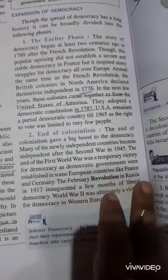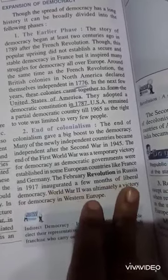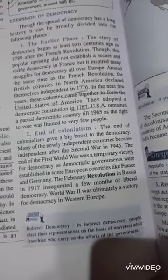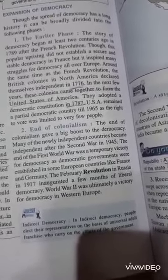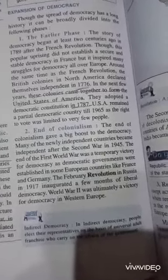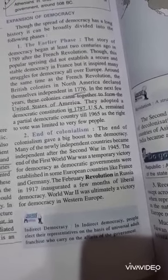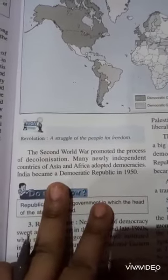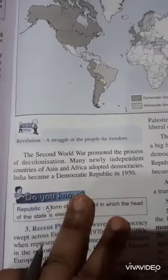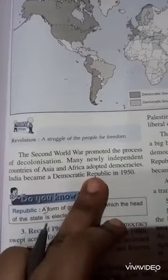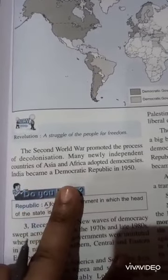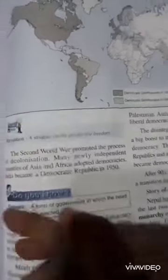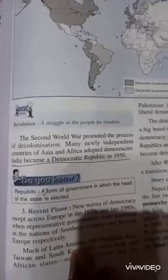The February Revolution in Russia in 1917 inaugurated a few months of liberal democracy. World War II was ultimately a victory for democracy in Western Europe. The Second World War also promoted the process of decolonization — meaning the end of the British Empire. Many new independent countries of Asia and Africa adopted democracies, and India became a democratic republic in 1950.